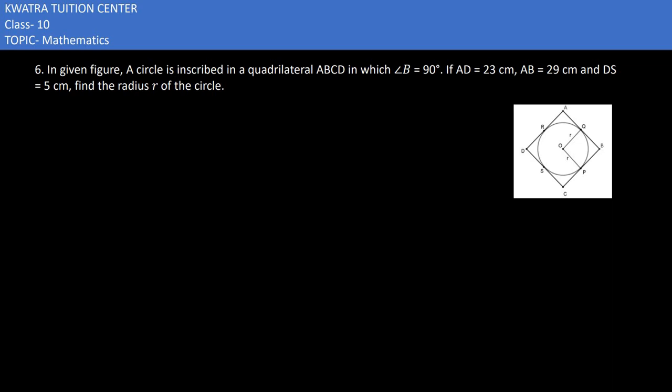Here in the 6th part, it says in a given figure, a circle is inscribed in quadrilateral ABCD in which angle B is 90°. AD is 23 cm, AB is 29 cm, and DS is 5 cm.